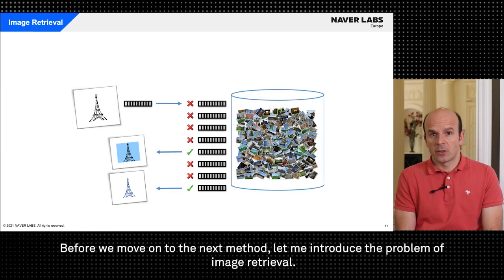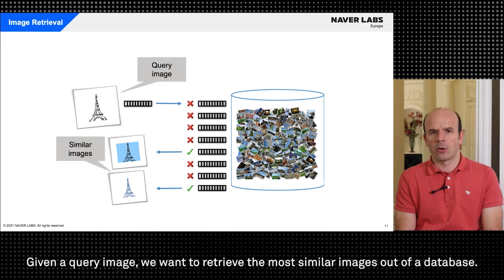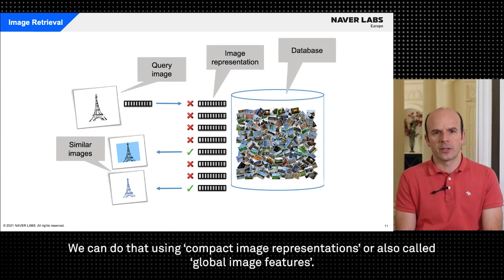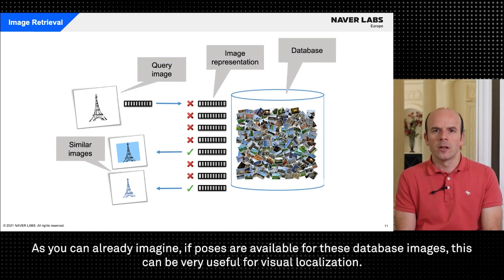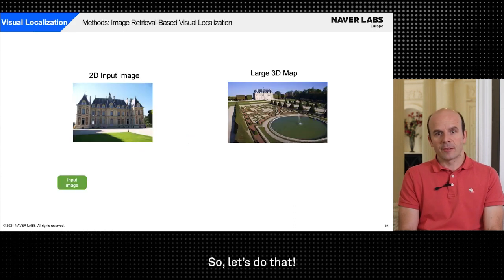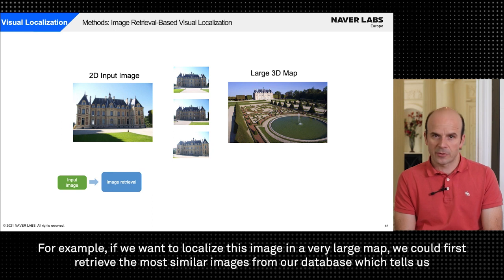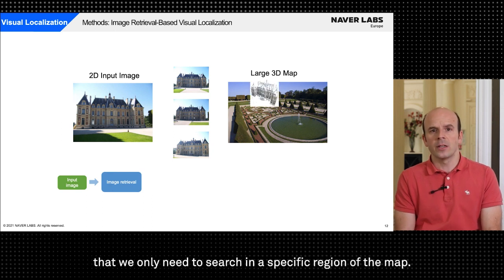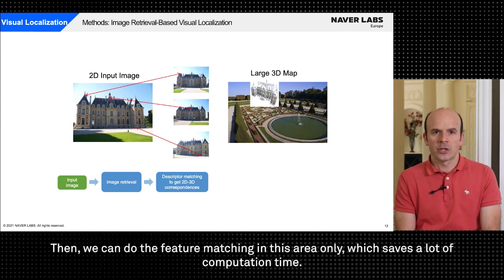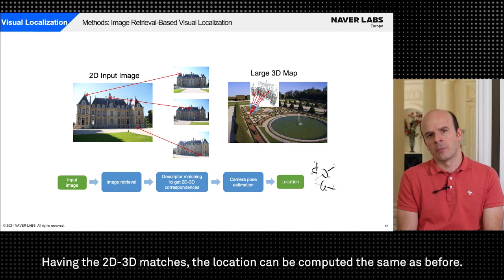Before we move on to the next method let me introduce the problem of image retrieval. Given a query image we want to retrieve the most similar images out of a database. We can do that using compact image representations or also called global image features. As you can already imagine if poses are available for such database images this can be very useful for visual localization. So let's do that. For example if we want to localize this image in a very large map we could first retrieve the most similar images from our database which tells us that we only need to search in a specific region of the map. Then we can do the feature matching in this area only which saves a lot of computation time. Having the 2D-3D matches the location can be computed the same as before.